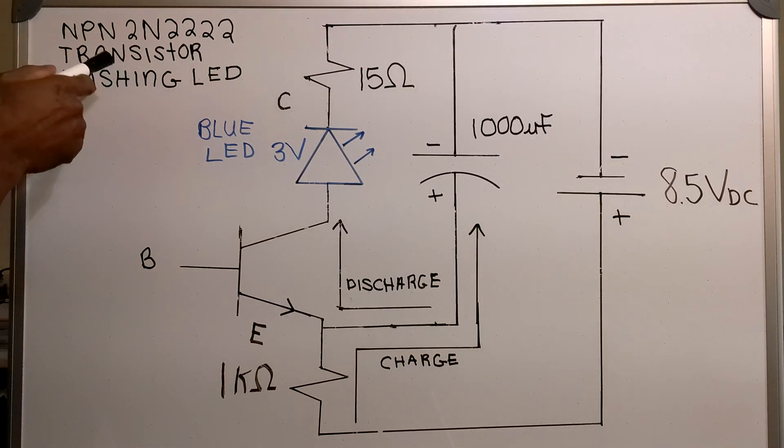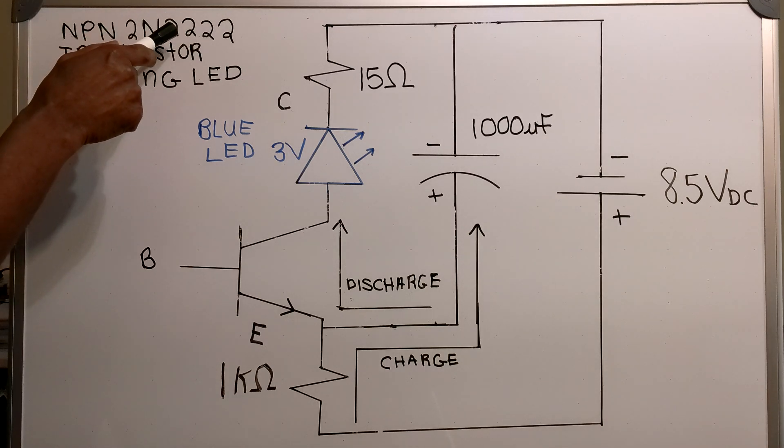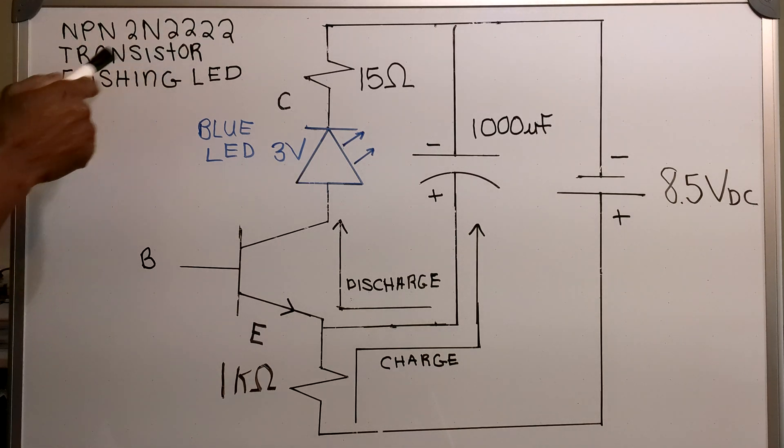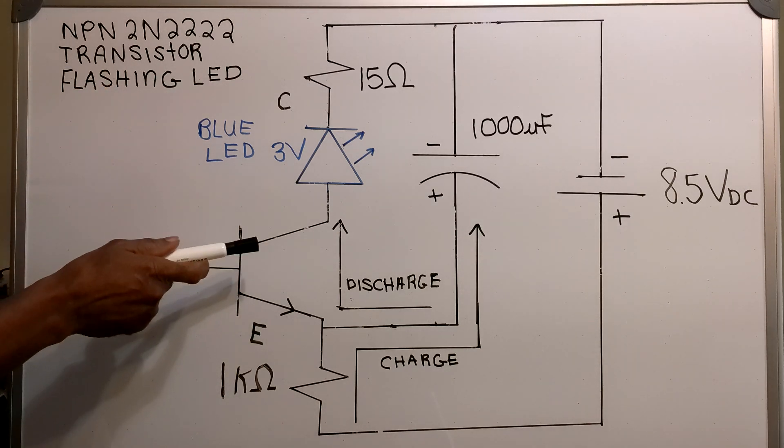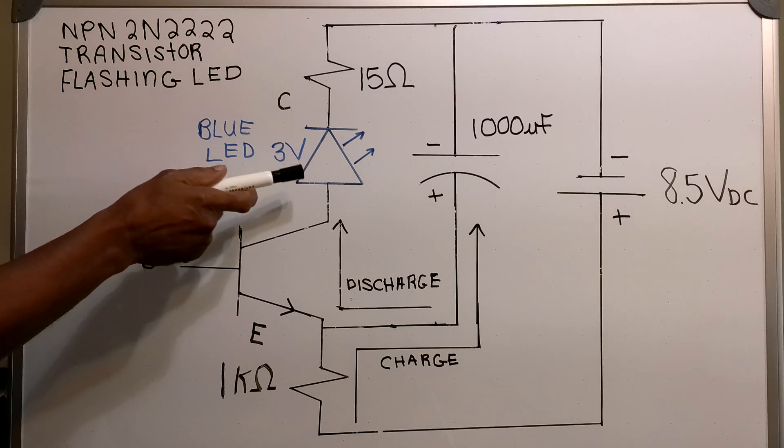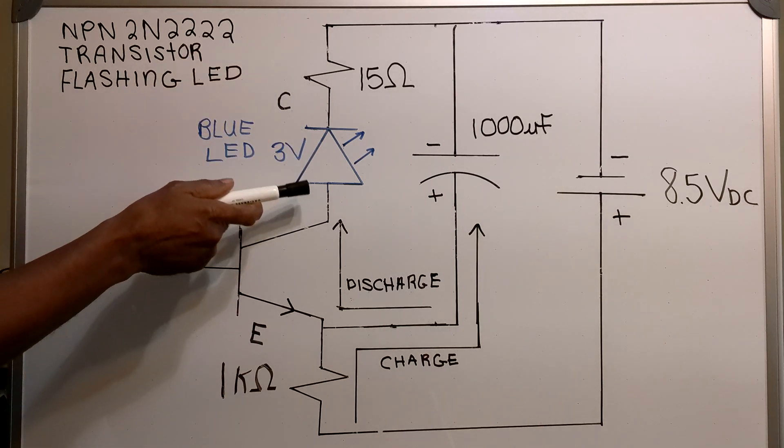In this video I have an NPN 2N2222 transistor flashing LED circuit. This is my transistor. This side of the transistor is the collector side.